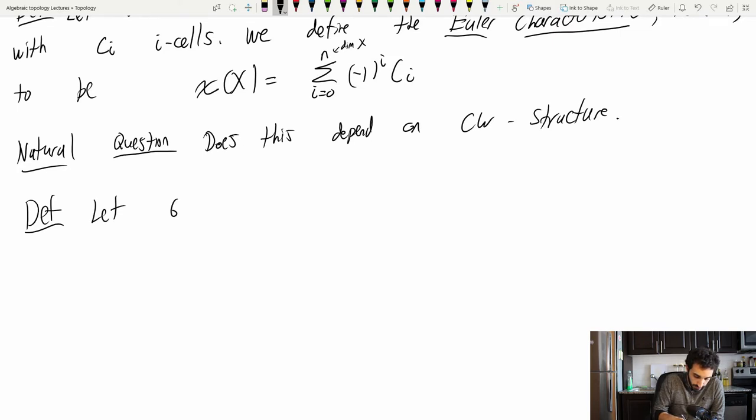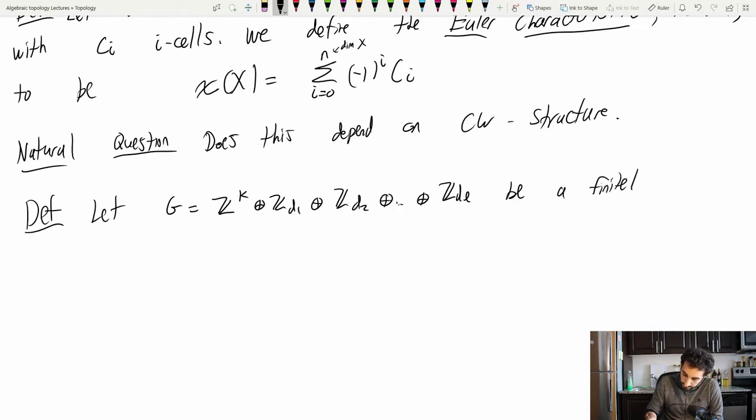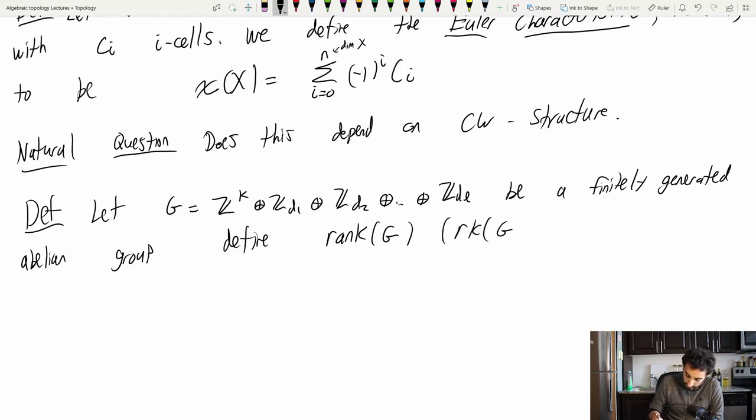Let G be equal to Z to the K, direct sum Z to the Z mod D1, direct sum Z to the Z mod D2, all the way up, be a finitely generated abelian group. We define the rank of G, sometimes I'll abbreviate this as RK of G, to be the integer K above. That is, it's sort of the free abelian part of this group.